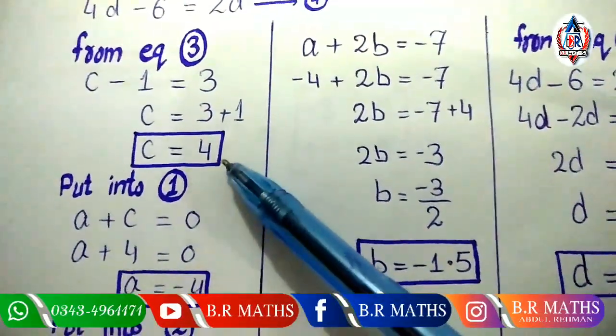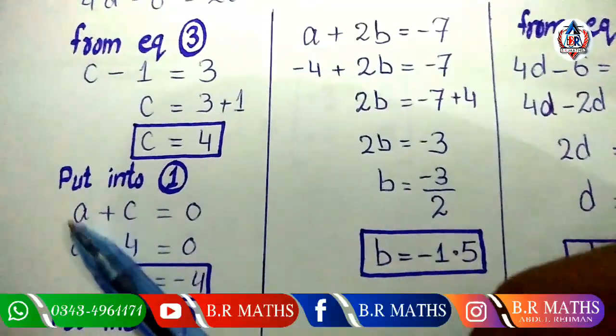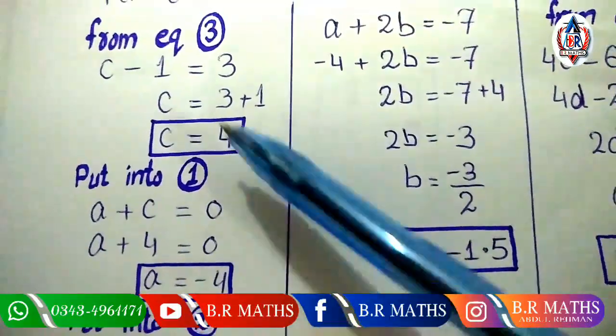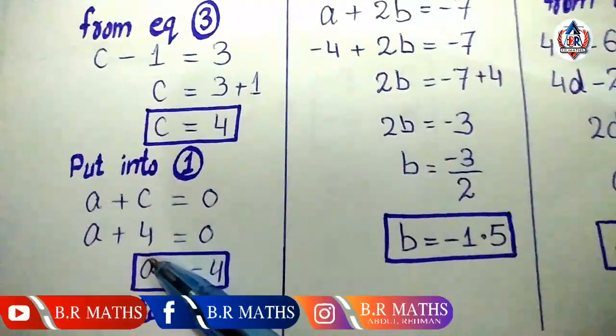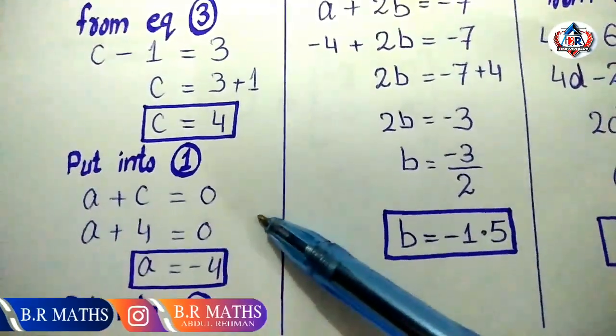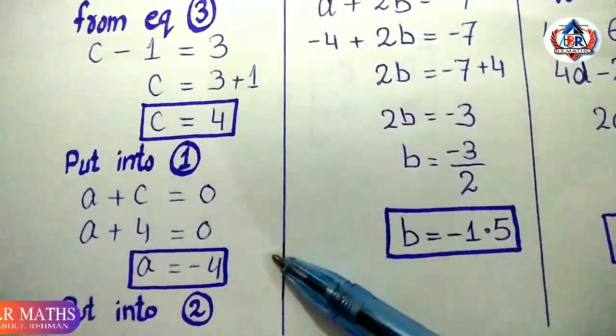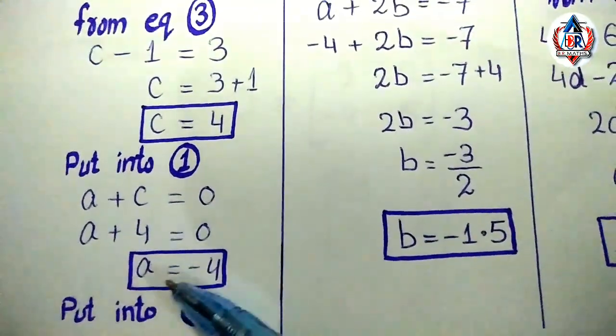Now put this value of 4 into equation number 1: a plus c equals 0. Put the value of c as 4: a plus 4 equals 0, so a equals minus 4.